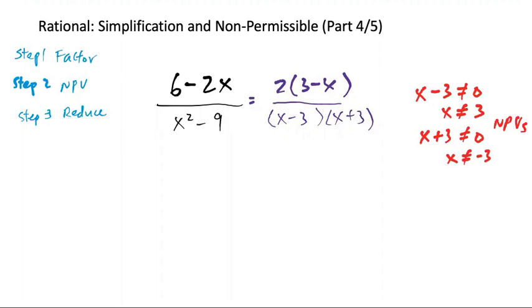Finally, we reduce. So be cautious. We cannot just cross out these because they're in a different position. Do you see it? 3 minus x is not, or does not equal x minus 3.